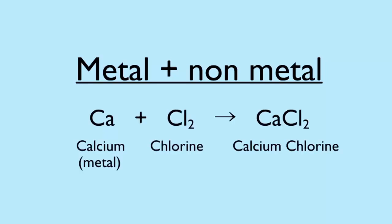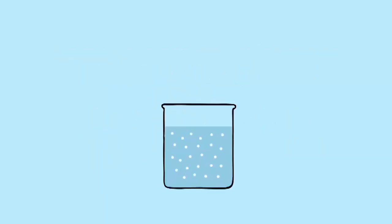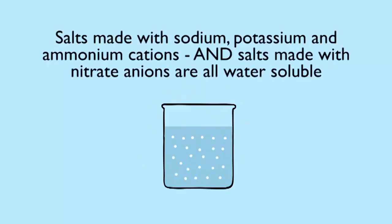All of these salts are soluble in water, but some salts are highly insoluble and some are what we call sparingly soluble, meaning only a small amount can dissolve and the rest stays as crystals. Salts made with sodium, potassium, and ammonium cations and those made with nitrate anions are all water soluble.